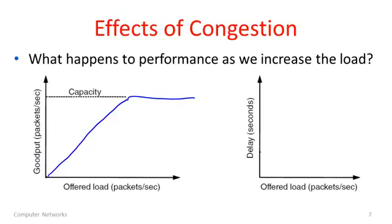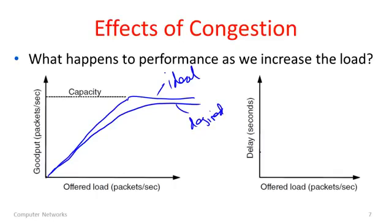But traffic is statistical — there are fluctuations, and sometimes queues overflow. So the more realistic curve shows a slight degradation: a bit of a gap where performance falls off as load increases, because some packets are lost due to queue overflow. As load gets very close to capacity, it becomes more likely we'll lose more packets, so that gap grows. What can also happen — and this is where congestion is really bad — is that goodput can collapse entirely. This is congestion collapse.